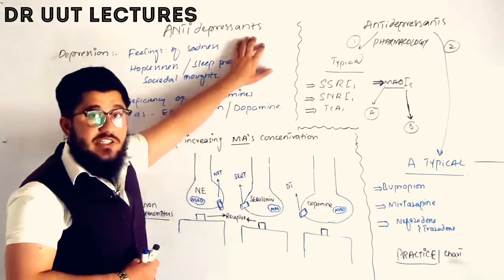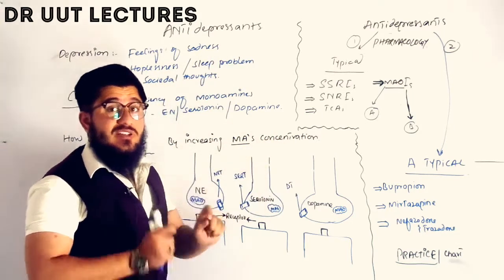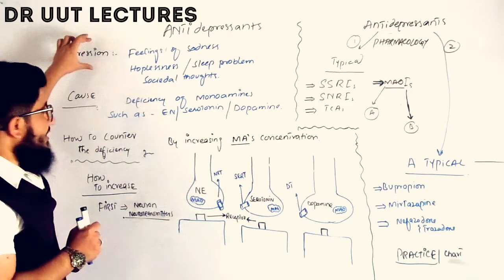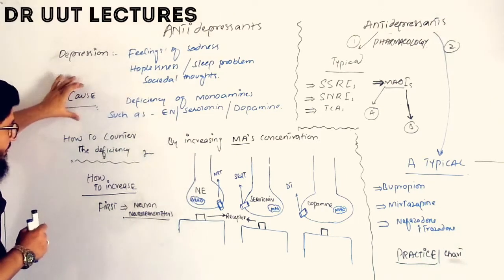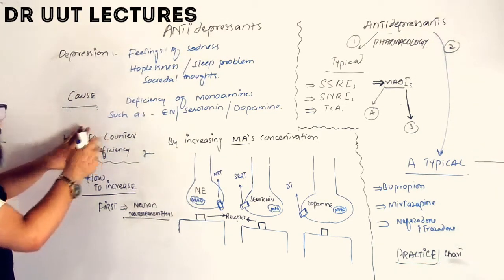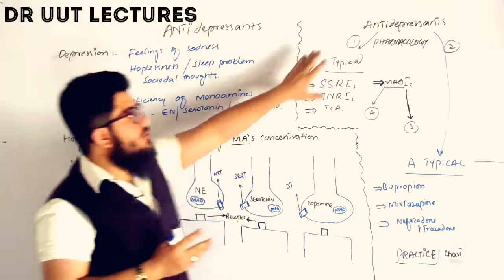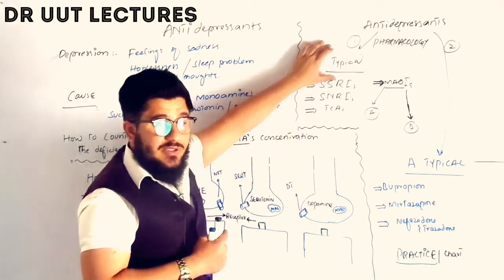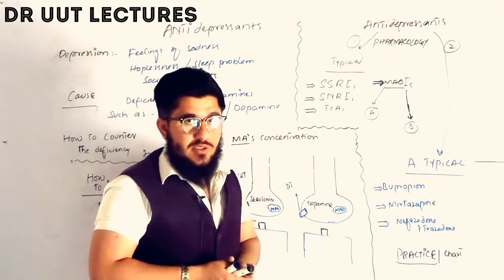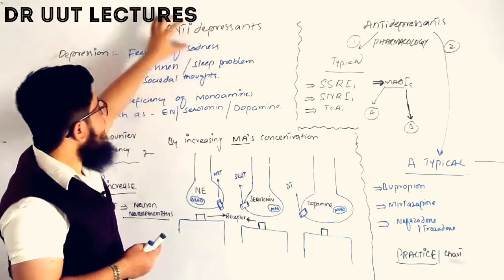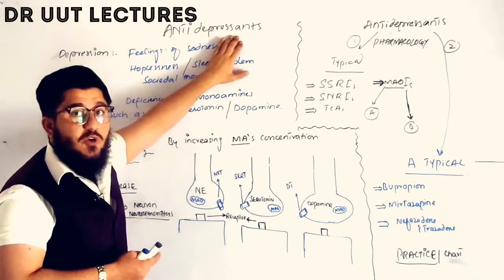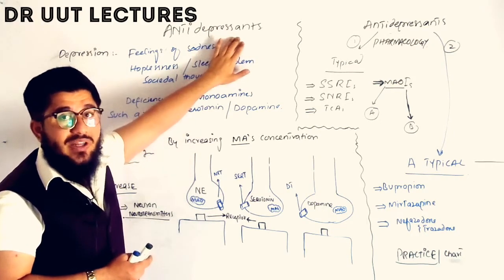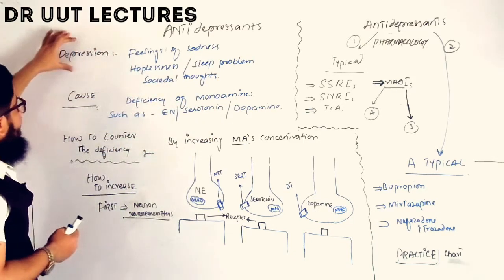In today's lecture we will talk about antidepressants. We will cover important points regarding the pathophysiology and pharmacology: what is depression, what is the cause of depression, how to counter this cause, and antidepressants pharmacology — including typical antidepressants and atypical antidepressants. Anti stands for against, and depressants comes from the term depression, so drugs used against depression are known as antidepressants.